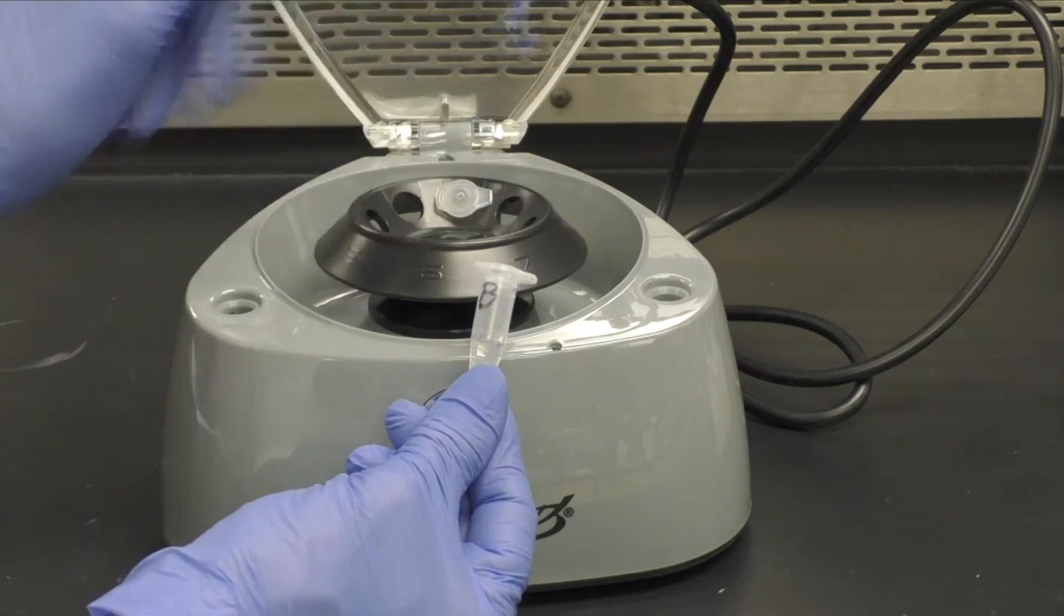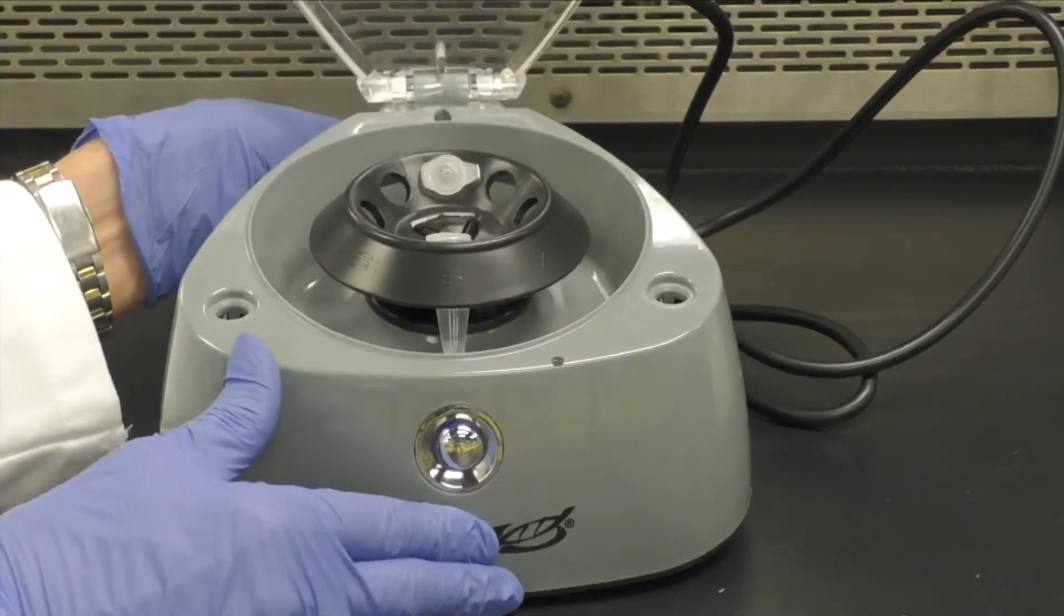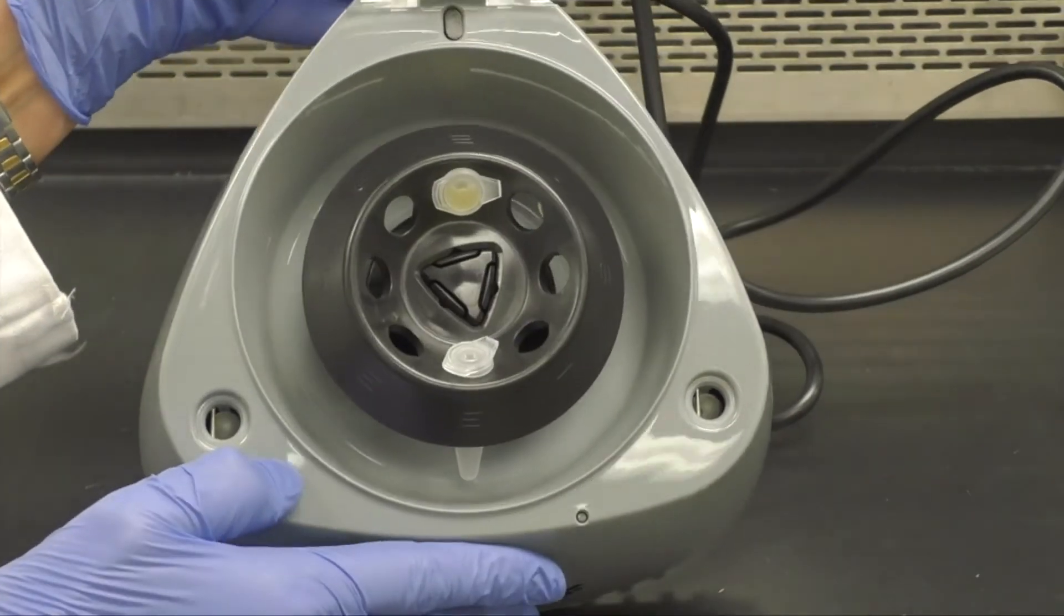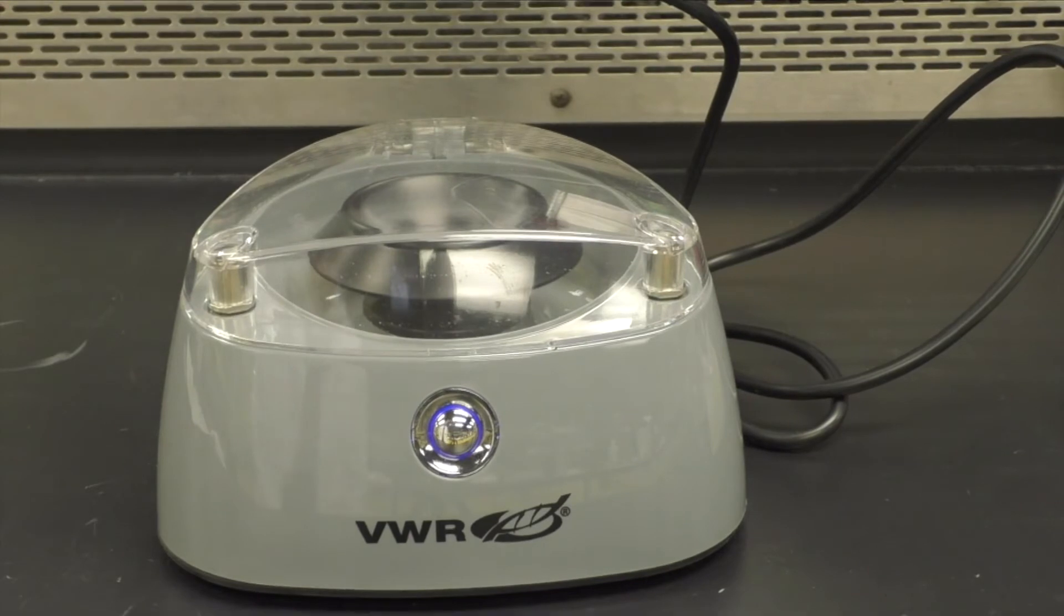When the 5 minutes is up, insert your patient sample and place the balance tube directly across from it as shown here. To start the centrifuge, just press down on the clear plastic cover.